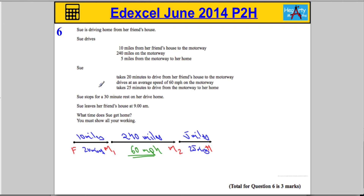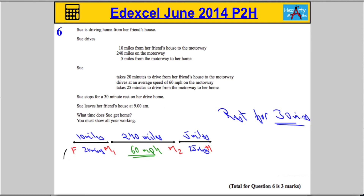She's also going to stop somewhere for a 30-minute rest — don't forget that, I'll write it up here: rest for 30 minutes. We're going to have to include that in our answer somehow. She's going to leave at 9 a.m., so we know she starts at 9 a.m. We want to know when she gets home.